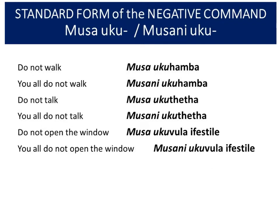Just like English uses 'do not' as the standard form and 'don't' as the shortened form, in Zulu the standard form adds a prefix to the front of the verb. For one person, you add 'musa uku' — so 'do not walk' is 'musa uku hamba'. If you're addressing a group, you add 'musani uku' — so 'you all don't walk' is 'musani uku hamba'.